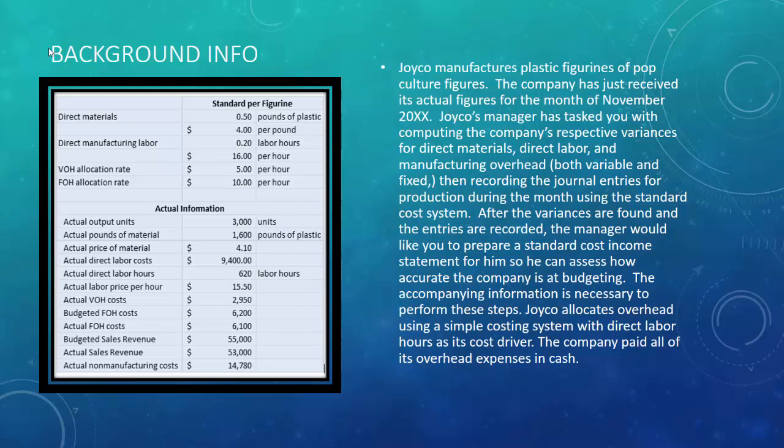The company has just received its actual figures for the month of November 20XX. The manager has tasked you with computing the company's respective variances for direct materials, direct labor, and manufacturing overhead that includes both variable and fixed. Then we need to record journal entries for production using the standard costing system, and prepare a standard cost income statement so the manager can assess how accurate the company is at budgeting.